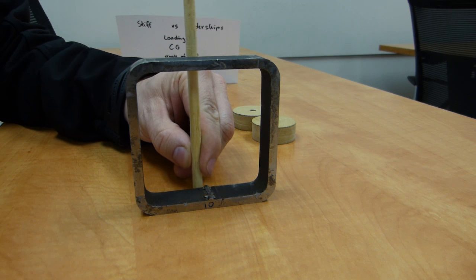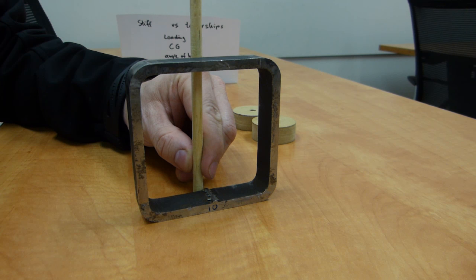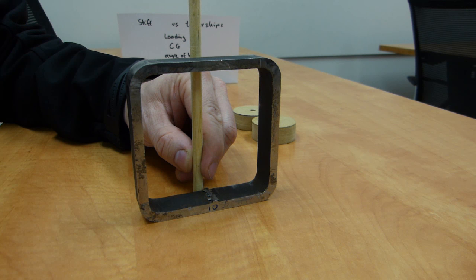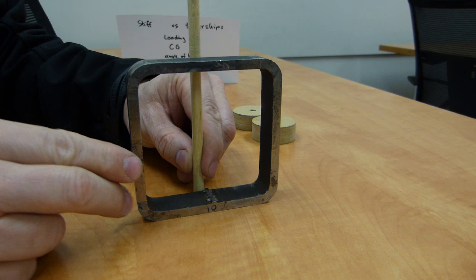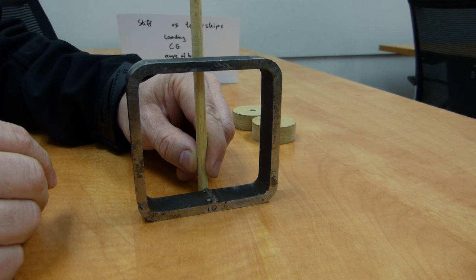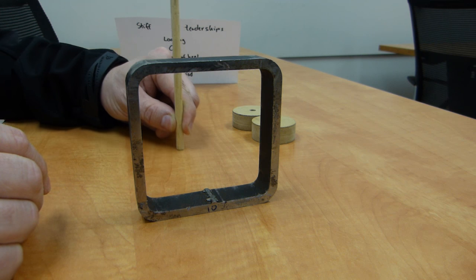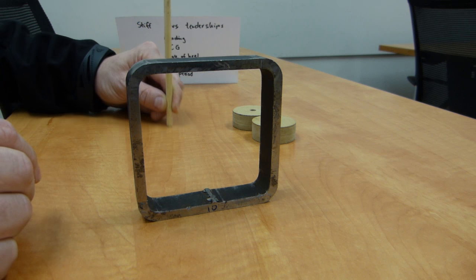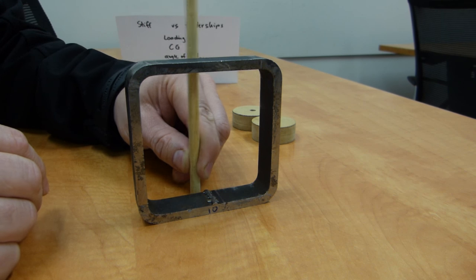This wooden stick here, this dowel is representing the center line of the transverse section of the ship. So this transverse center line is along the entire length of the ship from bow to stern, and it's in the middle.